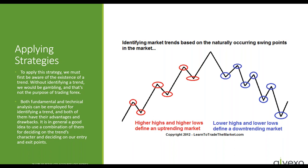I'm a price action trader — I only trade using basically three things: trends, triangles, and support and resistance. To apply this strategy, we must first be aware of the existence of a trend; without identifying a trend, we would be gambling. Both fundamental and technical analysts can be employed for identifying a trend and both have their advantages, but for our type of trading in our type of market, we can only use technical analysis. It is generally a good idea to use a combination of them for deciding on the trend's character and our entry and exit points.